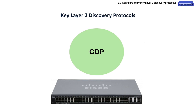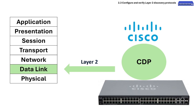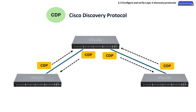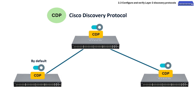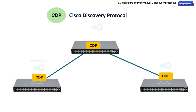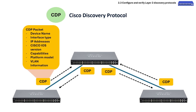Let's start with CDP. CDP, or Cisco Discovery Protocol, is a proprietary Layer 2 network protocol developed by Cisco Systems. It allows Cisco devices to share information with other directly connected Cisco devices, enabling them to discover each other and exchange information. The protocol is enabled by default and requires no additional configuration to start working. CDP messages include: device name, interface types and numbers, IP address of connected devices, Cisco IOS version, capabilities, platform model, and VLAN information.